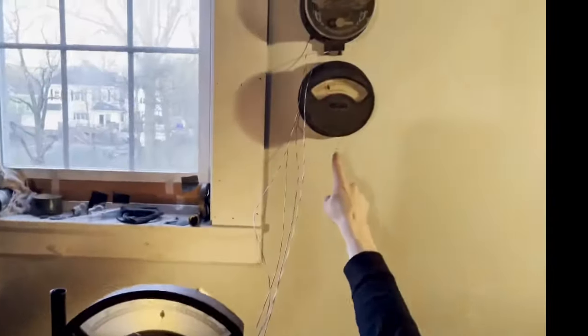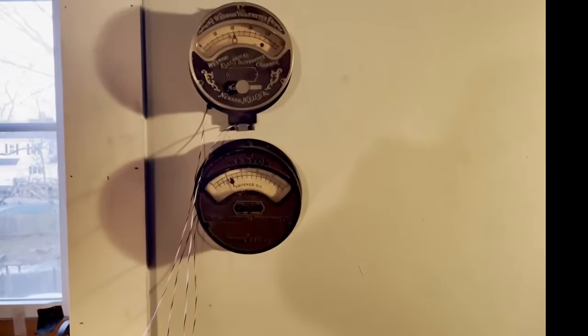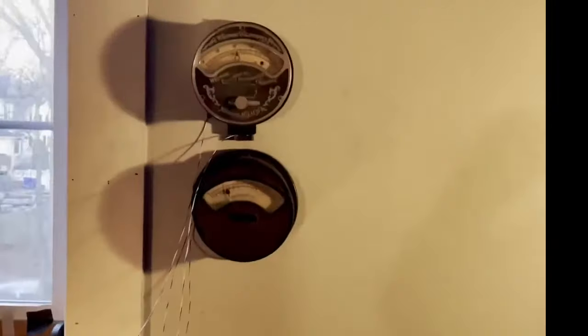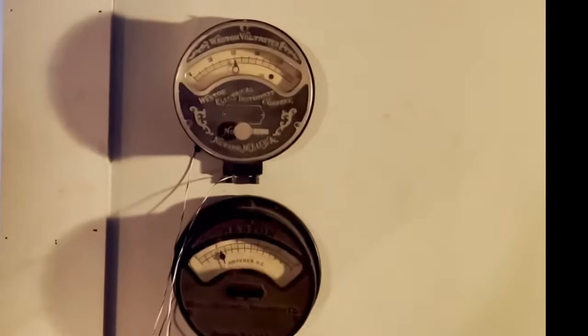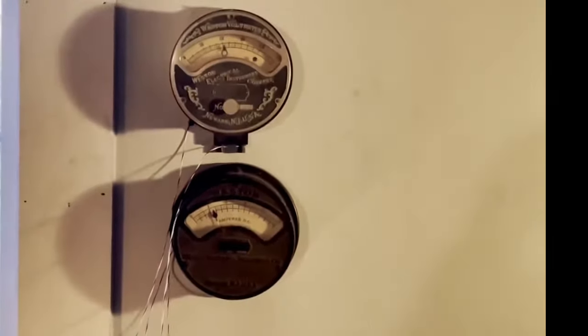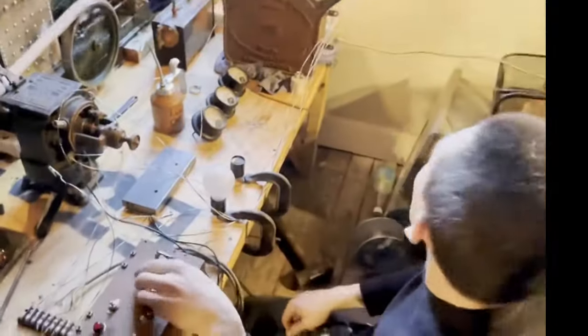This meter is the field ammeter. That shows us how much electrical current is passing through the electromagnetic field coils. And you see it go up and down when I change the rheostat setting. See that? And then the meter on top is the bus voltmeter, which shows how much voltage, how much electric potential, is across the machine's commutator and how much is going to every device hooked up to it.